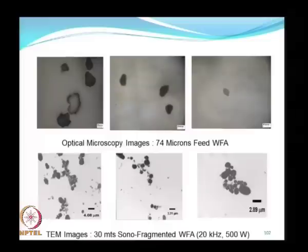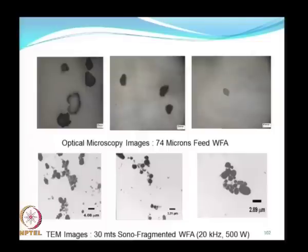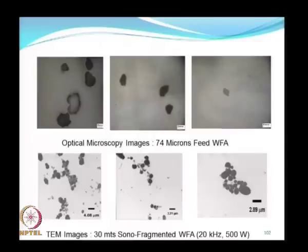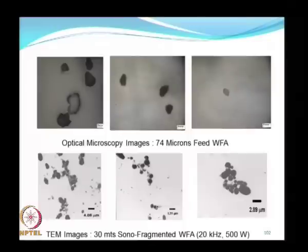The pictures below show TEM images of white fused alumina particles that have been exposed to 30 minutes of sonofragmentation at 20 kilohertz and 500 watt input power. You can see that there is a substantial size reduction — many of the particles are in the micron to submicron range. The level of agglomeration is not very significant. One of the advantages of the ultrasonic method of size reduction is that, unlike ball milling which actually promotes agglomeration, the mechanism of sonofragmentation provides for simultaneous dispersion. So, the extent of agglomeration seen is significantly less in sonofragmentation compared to various other methods.